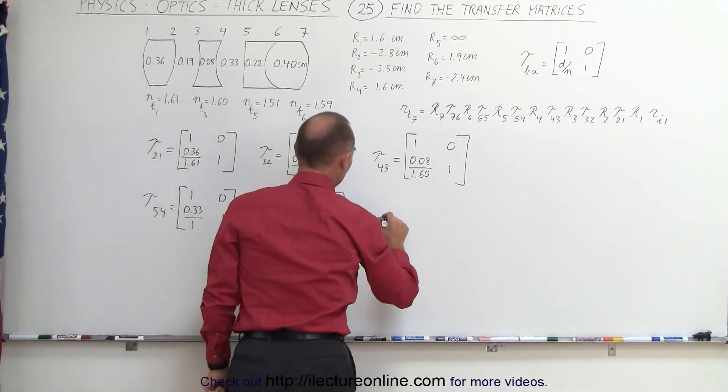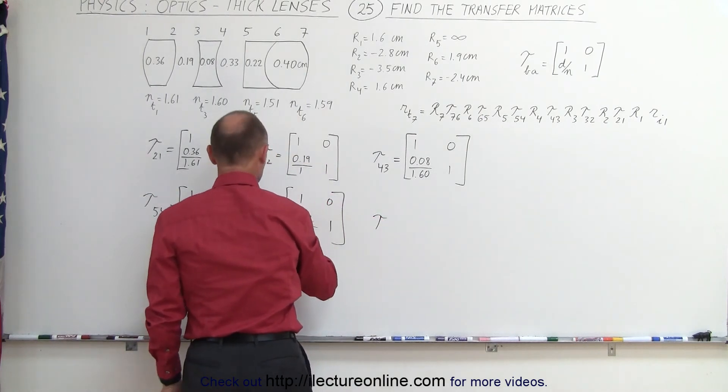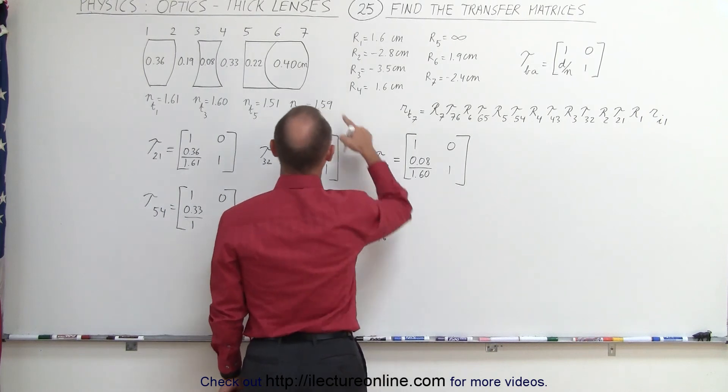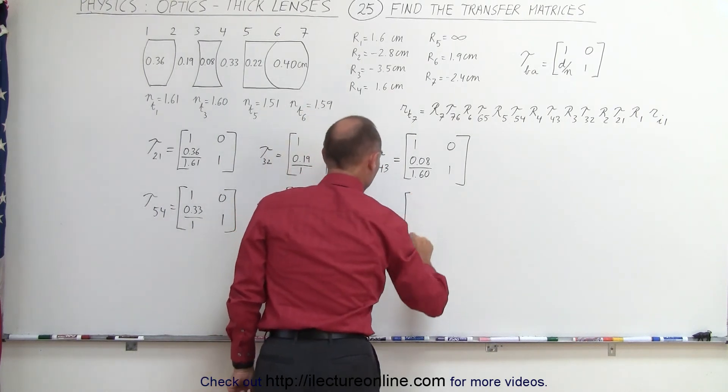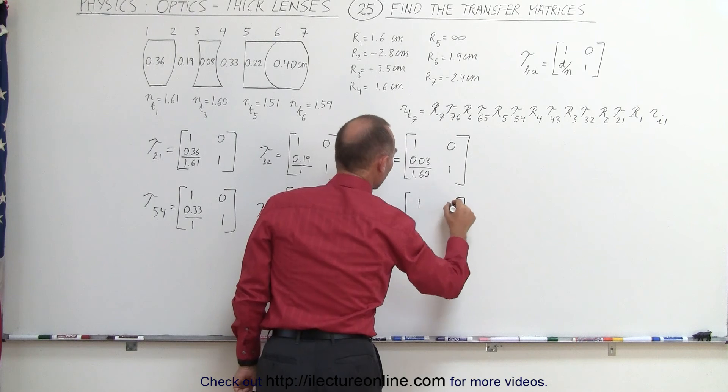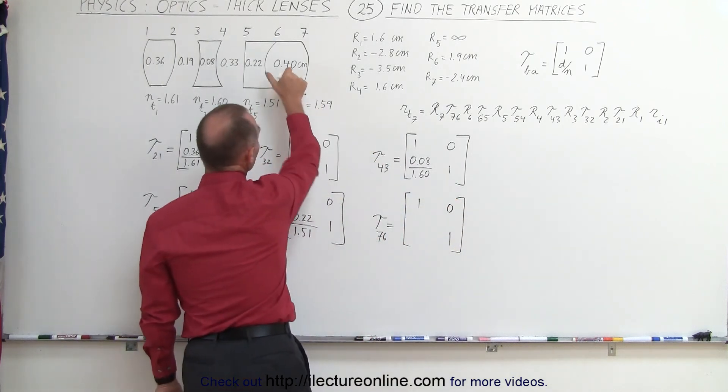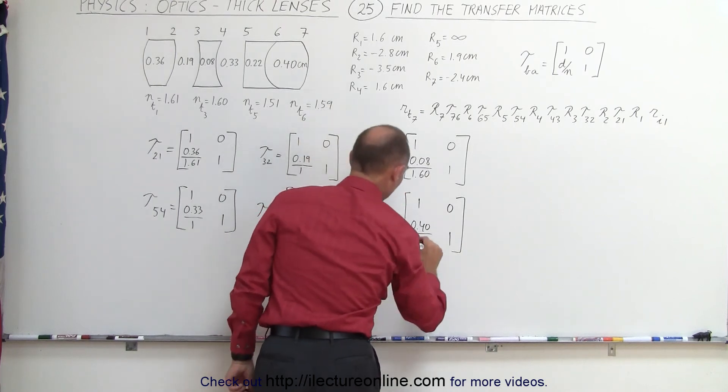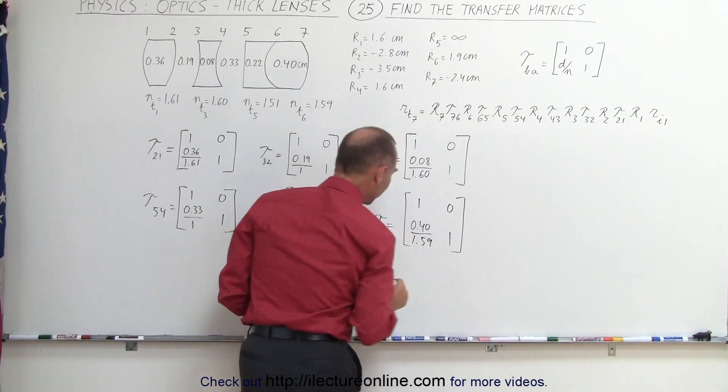And finally, the transfer matrix. Need an equal sign there. That would be from 7 to 6. That's the last boundary right here. Again, we have 1, 0, 1. And here, that would be the thickness of the lens, 0.40, divided by index of refraction, 1.59.